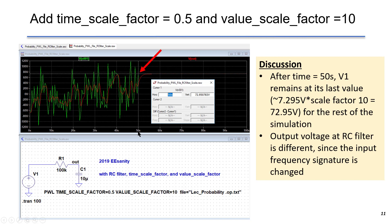After time equals to 50 seconds, because there is no data available, the output voltage remains at its last value, which is 7.295 volt times the scale factor 10 equals to 72.95 volt, from 50 seconds to 100 seconds. The output voltage at RC filter is different from the last example, because the input voltage frequency signature is changed.